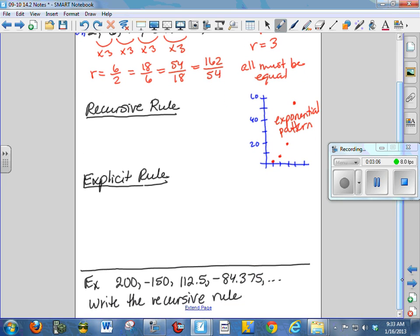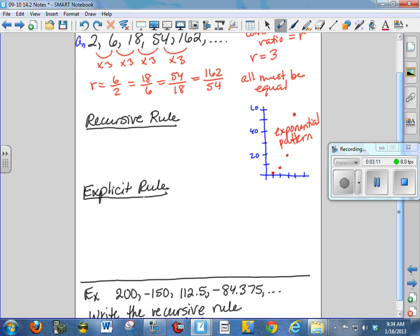Now to write a recursive rule, we think in our heads, start with 2 and multiply by 3 each time. So we say a sub 1 is 2, and a sub n is the previous term, a sub n minus 1, times 3. So remember, we have to say for n greater than or equal to 2, then we use our rule. So there's our recursive rule. Remember, you have to write the whole thing for that to be the recursive rule.